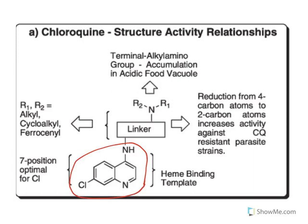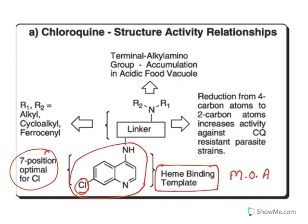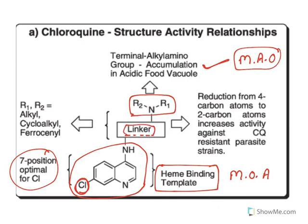For the structure-activity relationship (SAR) of chloroquine: the quinoline ring with the 4-amino substitution is required for heme binding — this is the pharmacophore responsible for the mechanism of action and cannot be changed. At the 7th position, chloro-substitution is optimal. The terminal alkylamino group is required for accumulation in the acidic food vacuole, also essential for mechanism of action and cannot be changed. The only modifiable part is the linker: the 4-carbon linker in chloroquine can be replaced with a 2-carbon linker, which increases activity against chloroquine-resistant parasites.